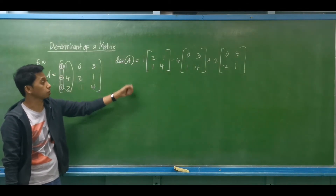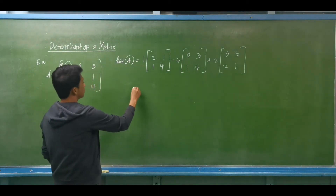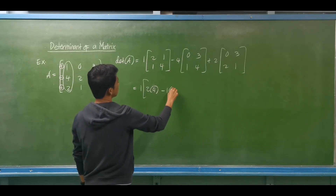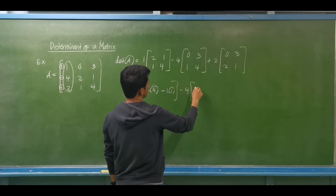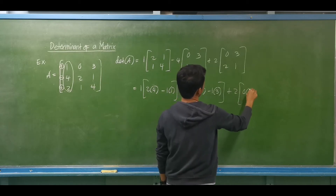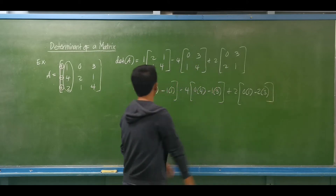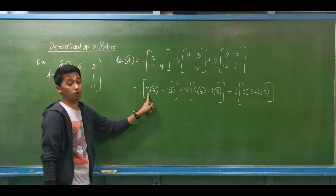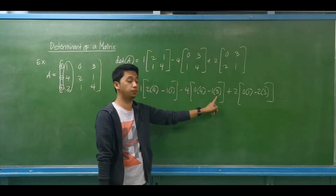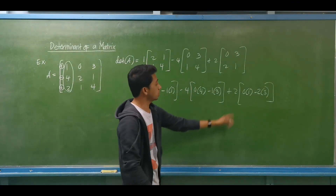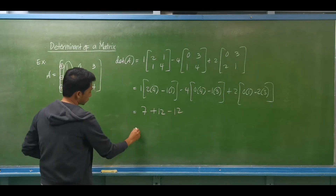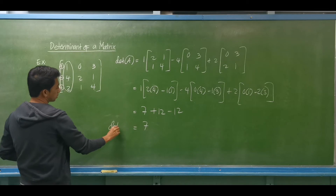We have 1 multiplied by (2×4 minus 1×1), then minus 4 multiplied by (0×4 minus 1×3), then plus 2 multiplied by (0×1 minus 2×3). Simplifying: 2 times 4 is 8 minus 1, we have positive 7. Negative 4 times negative 3 is positive 12. Then 2 times negative 6 is negative 12. We get the same answer: the determinant of matrix A is positive 7.